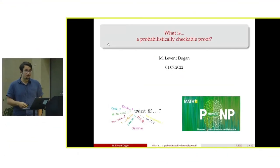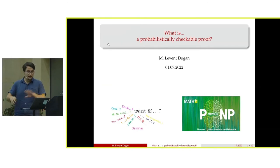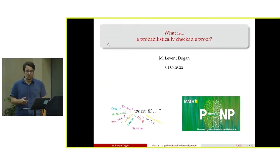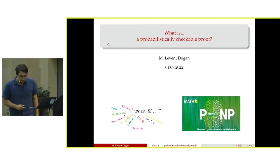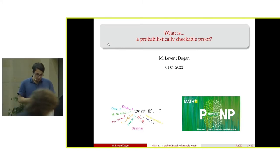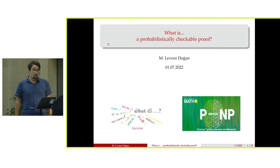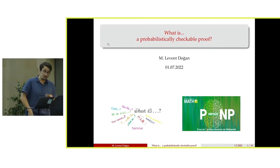They gave me this chance to speak in this fancy hall. This is the first time we are doing a WOTIS seminar in such a fancy hall. It's a happy occasion. Today the topic is probabilistically checkable proofs, and we are in this special event — the P versus NP event.